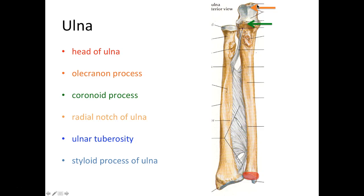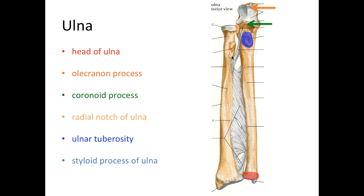We also have a radial notch of the ulna — more proximal — which is a little scoop that allows the head of the radius to make contact and articulate with the ulna. The ulnar tuberosity is a perforated structure very similar to the radial tuberosity. And lastly we have the styloid process of the ulna, also a pen-like structure that can be palpated.